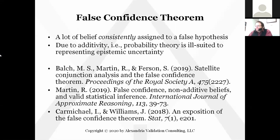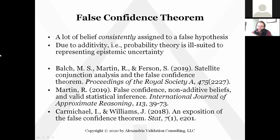Ryan Martin went over the false confidence theorem last week. This is the problem you'll encounter trying to use not just Bayesian inference, but any additive or purely probabilistic representation of inferential uncertainty — where you get these really high assignments of belief to a false proposition. At least in satellite conjunction analysis, we've seen this presents a serious practical problem, where you'll be consistently and severely — by several orders of magnitude — underestimating your collision risk exposure.